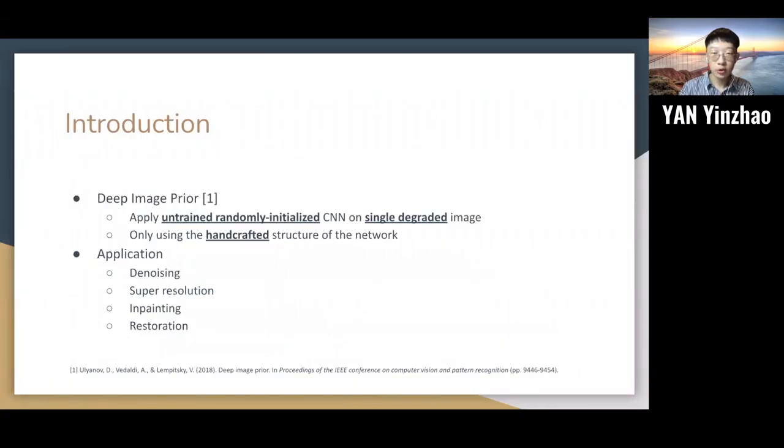We have continued the work of the Deep Image Prior. For the Deep Image Prior, it applied and trained a randomly initialized CNN on a single degraded image. It only used the handcrafted structure of the network. It has four applications, which includes image denoising, image super-resolution, image inpainting, and image restoration.